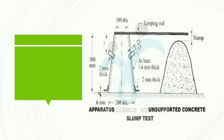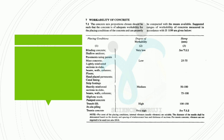Slump is a measure of workability. Degrees of workability are low, medium, and high. Generally, mass concrete has a low degree of workability with a slump value of 25–75 mm. For heavily reinforced sections, medium degree of workability is 50–100 mm. Pumpable concrete is 75–100 mm. Trench fill and in-situ piling — all very high workability — has a range of 100–150 mm.